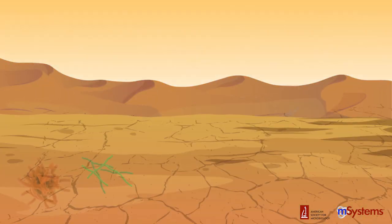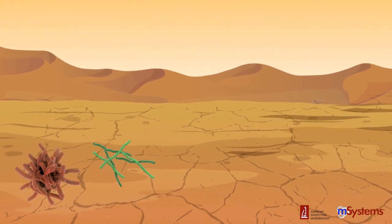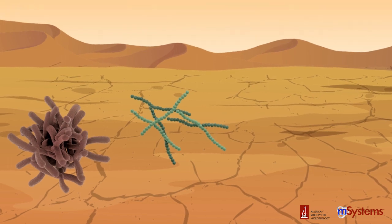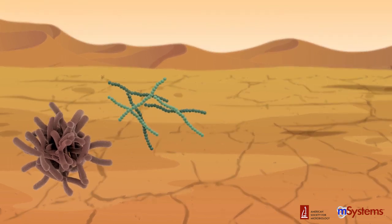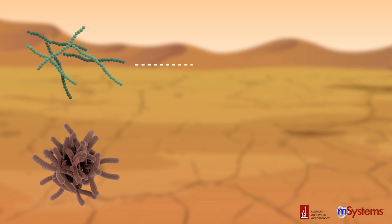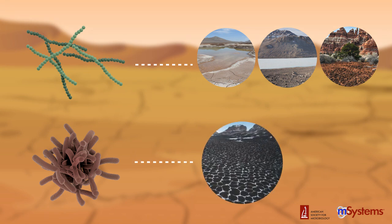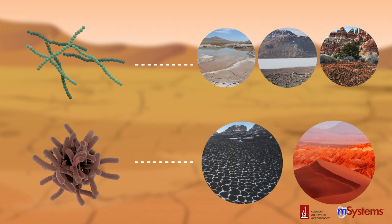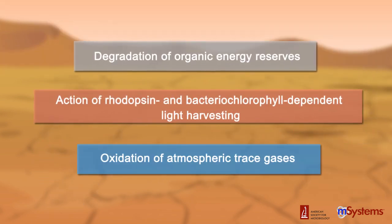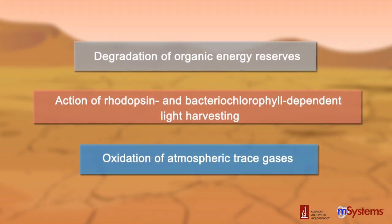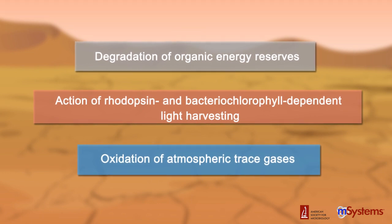Accumulating evidence suggests that dormancy is a common strategy that facilitates microbial survival in response to environmental stress conditions. For example, photoautotrophs are restricted to specific niches in extreme deserts, whereas metabolically versatile heterotrophs persist in the cold Antarctic deserts and hyperarid Atacama desert soils. Three distinct dormancy strategies allow these microorganisms to survive in the most intensely arid and oligotrophic habitats.